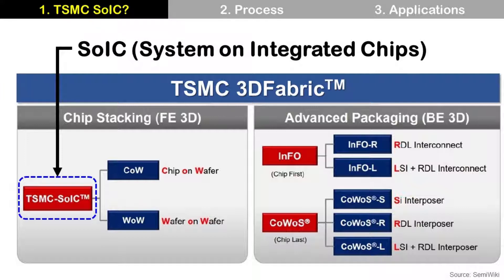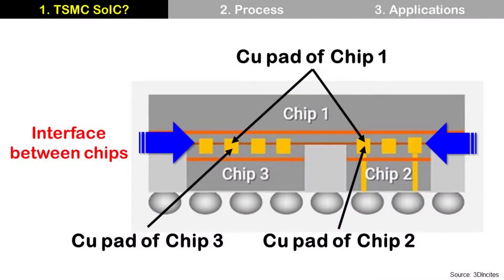FE3D means front-end 3D. BE3D means back-end 3D. TSMC SOIC is an interconnection technology between chips using FAB technology instead of packaging technology. Packaging technology uses micro-bumps to connect chips,